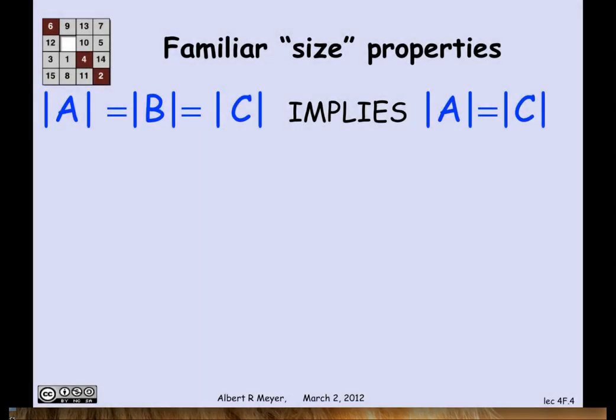Well, let's look at some properties of this notion of same size to see if it holds up and acts in a sensible way. If you look at finite sets, then if A and B are the same size and B and C are the same size, then obviously A and C are the same size. So does that carry over when we try to use bijection as though it meant same size for infinite sets as well?